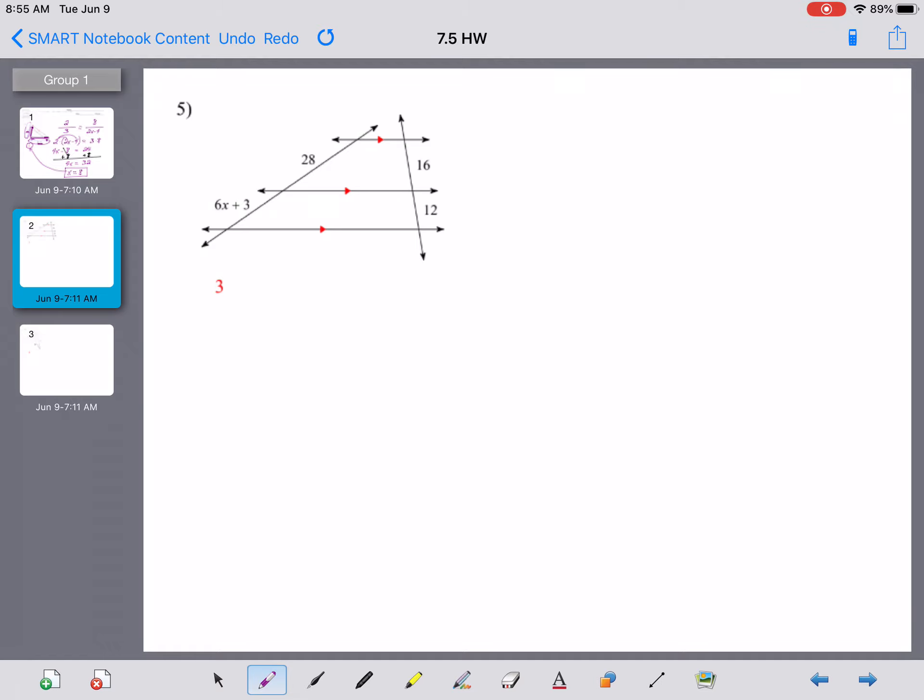Number 5 uses the corollary to the side splitter theorem. We don't really have a triangle here but we do have 1, 2, 3 parallel lines cut by 2 different transversals. That corollary told us that when you have 2 transversals cutting 3 or more parallel lines, they cut them off proportionally. I like this theorem and the setup because the proportion sets up just as it appears. 28 is the number on the top left in the diagram, so I'm going to put it on the top left in my proportion. It doesn't have to be that way, but there's no good reason not to. From there, a couple different ways you can go. I like to just keep this in order. The 28 is the top left, the 6x plus 3 is the bottom left, so I'll put that right here. The top right number is 16 and the bottom right number is 12.